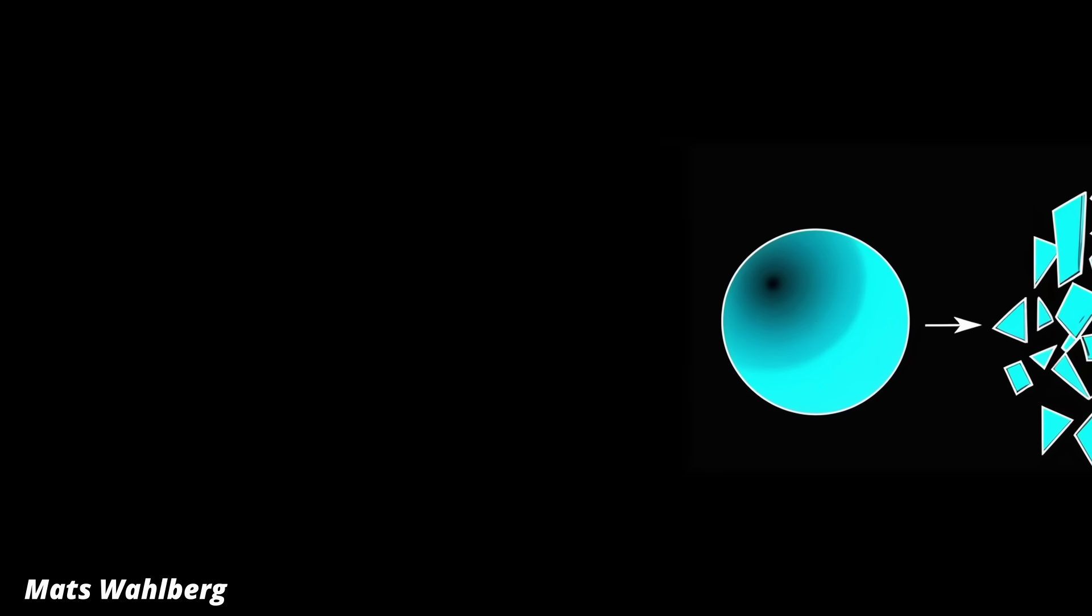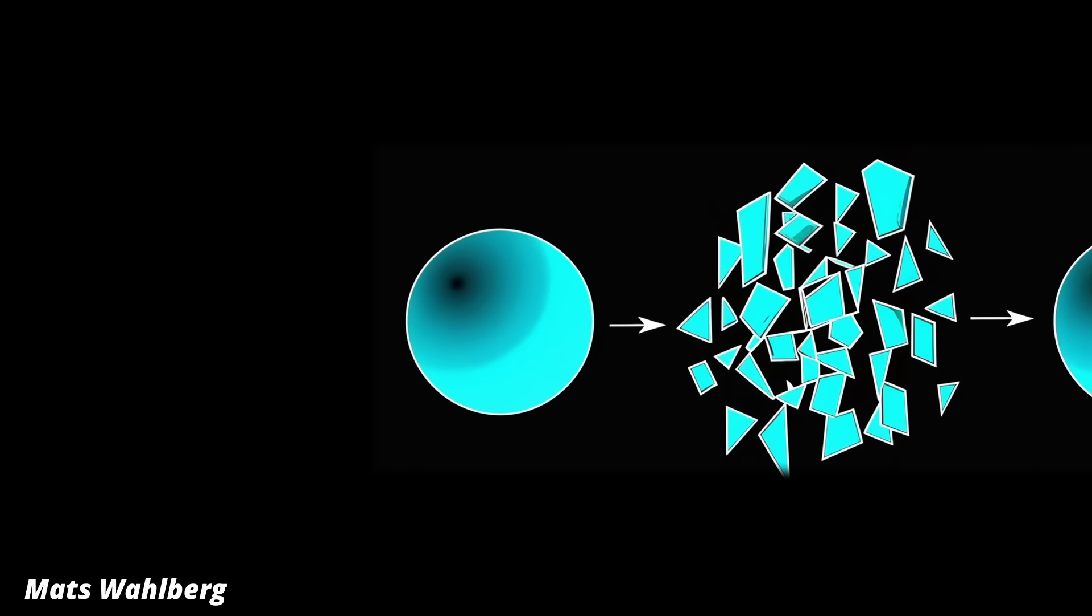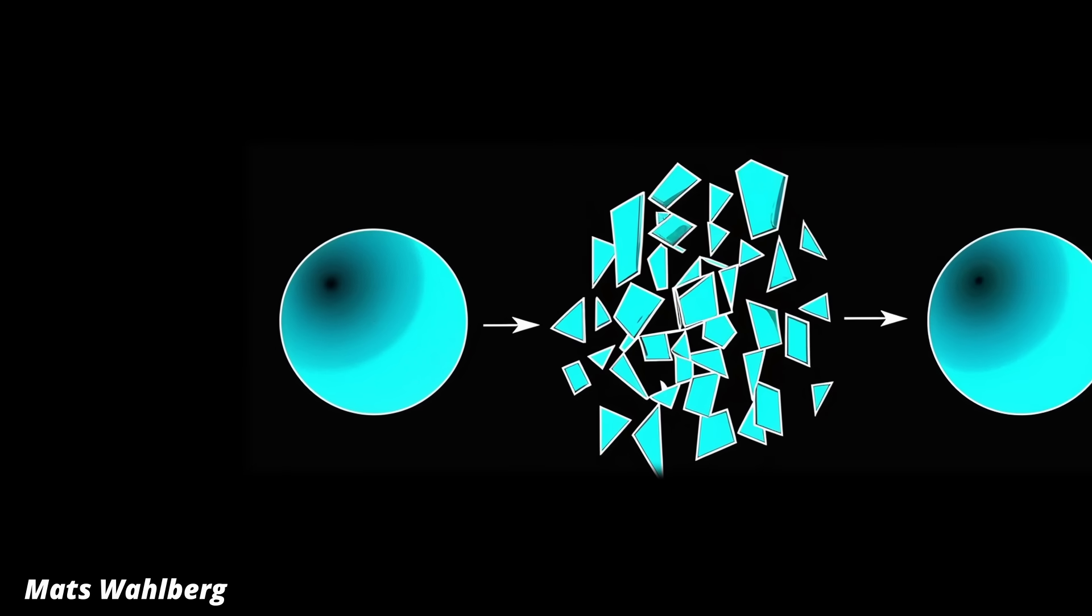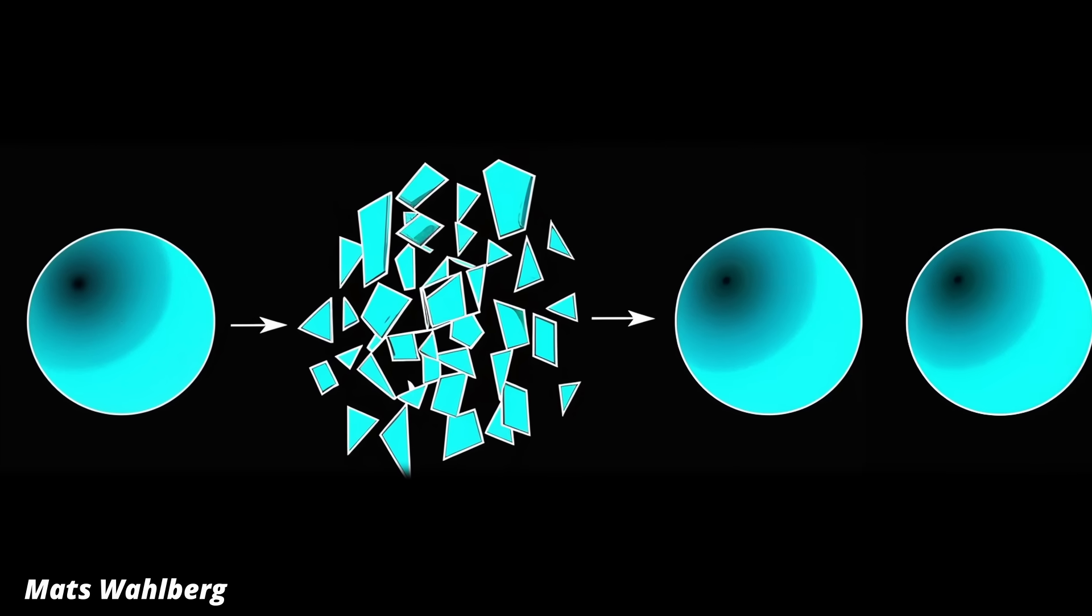And finally, the Banach-Tarski paradox. You can decompose a solid sphere in three-dimensional space into finitely many disjoint pieces and then reassemble them using only rotations and translations into two spheres each the same size as the original. What even is space?